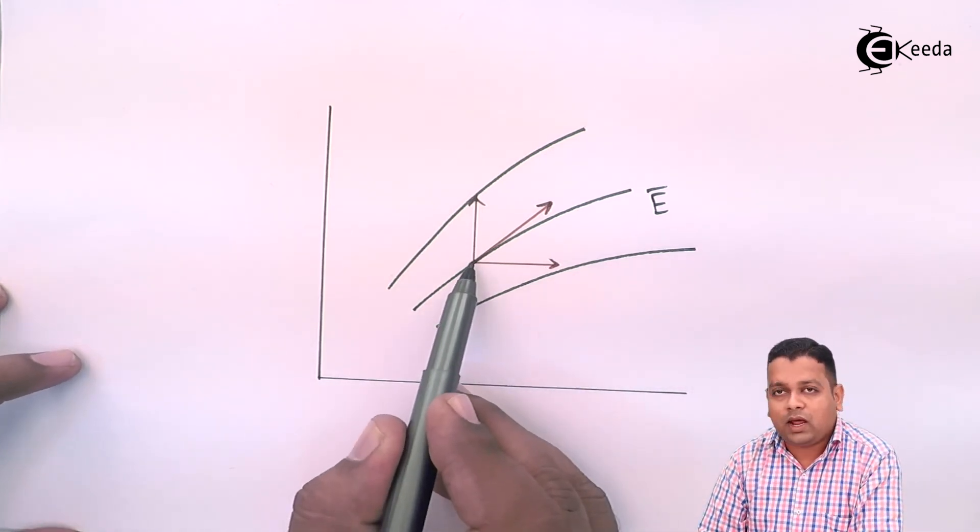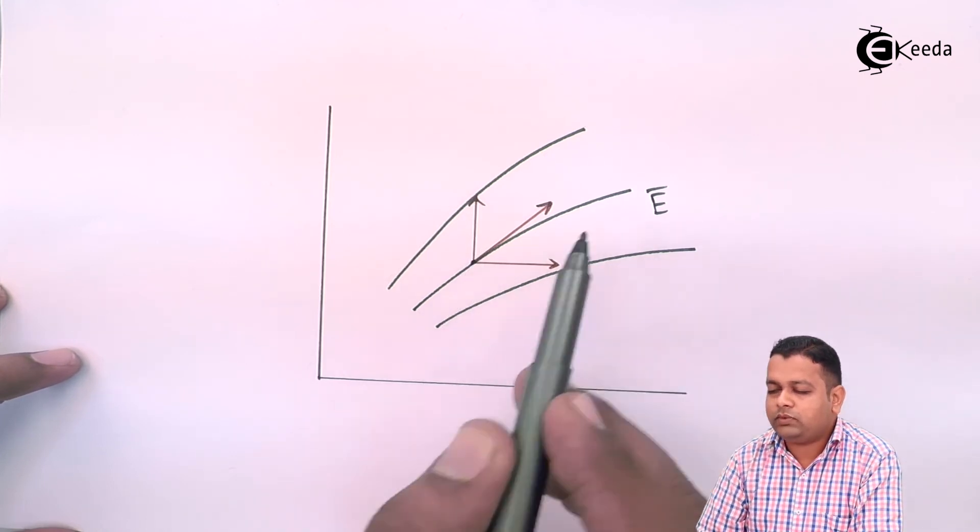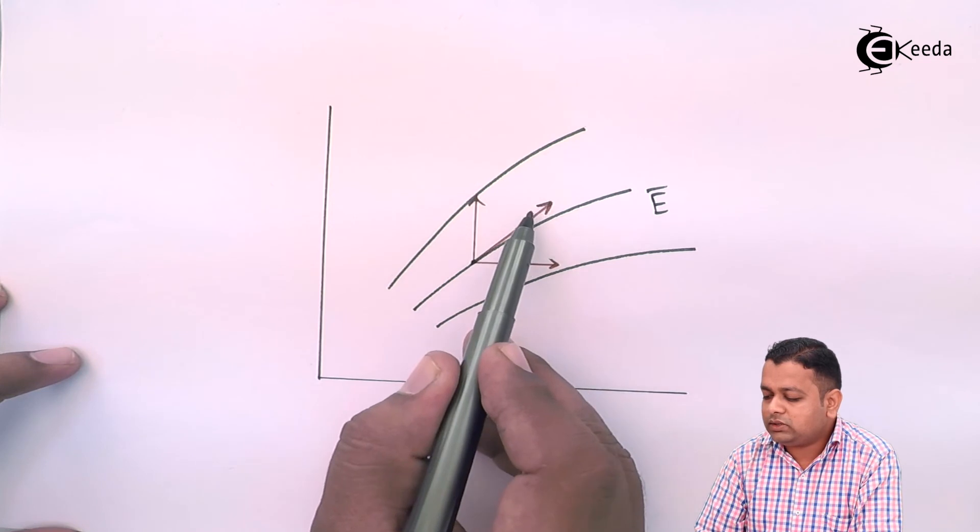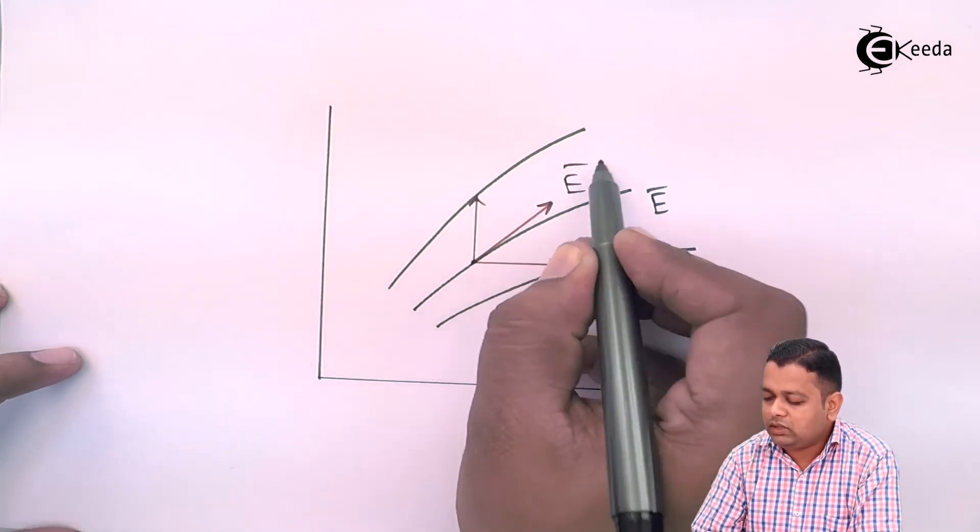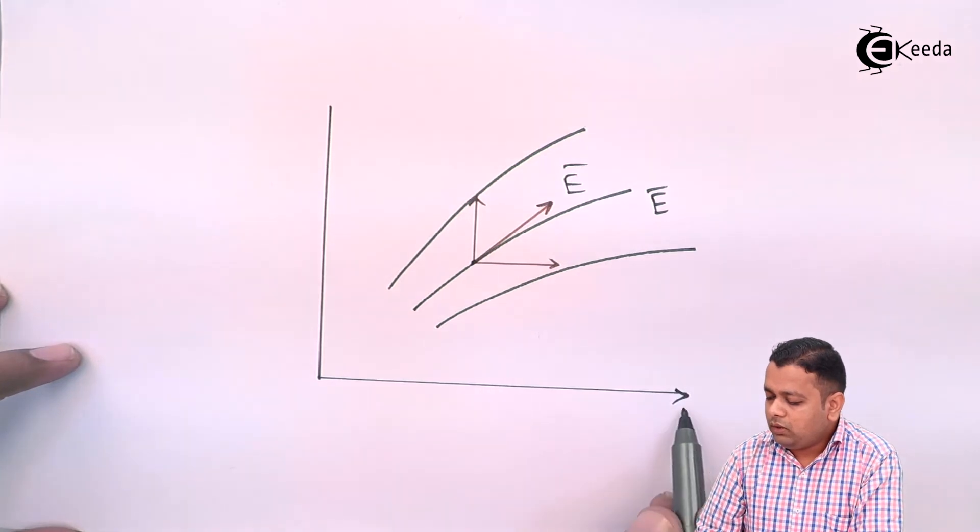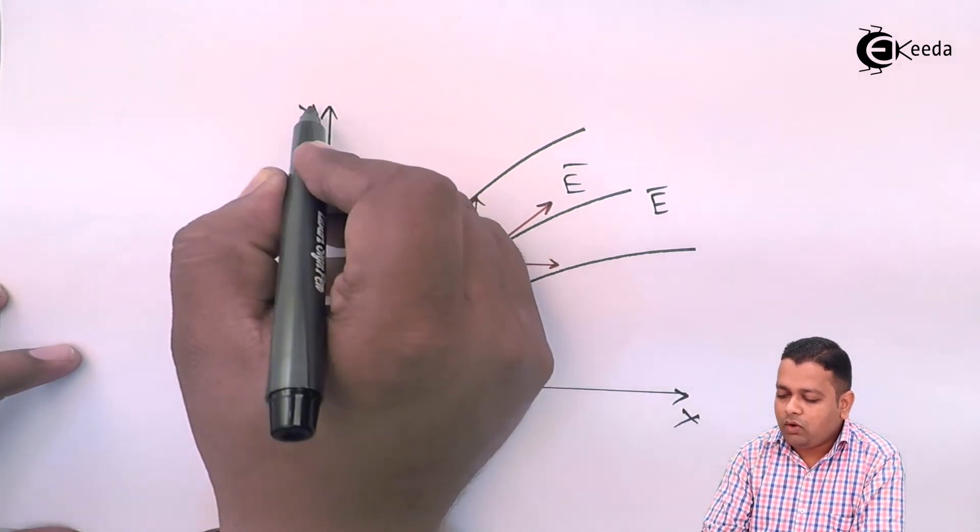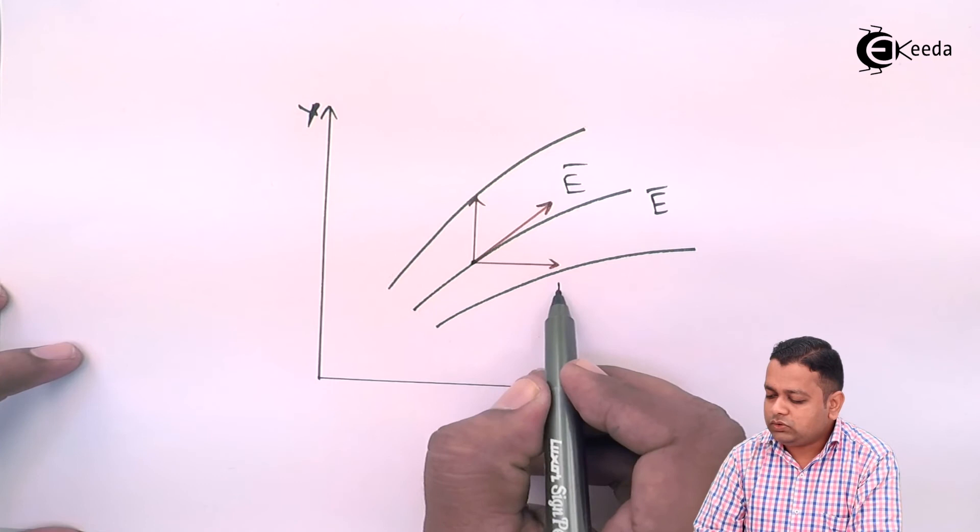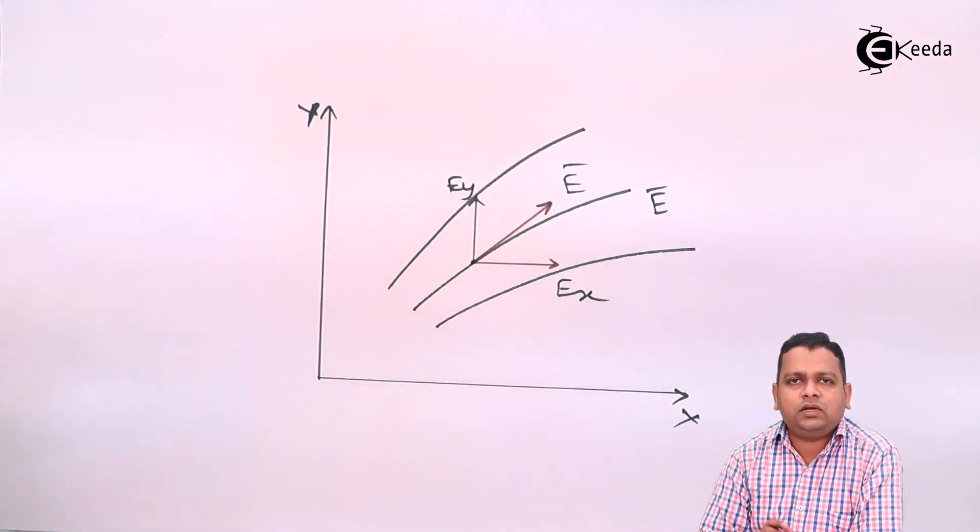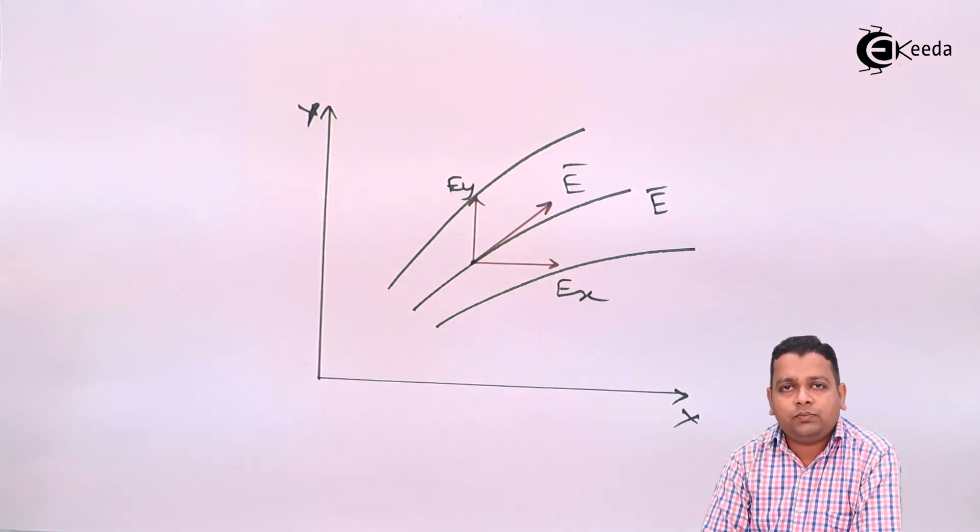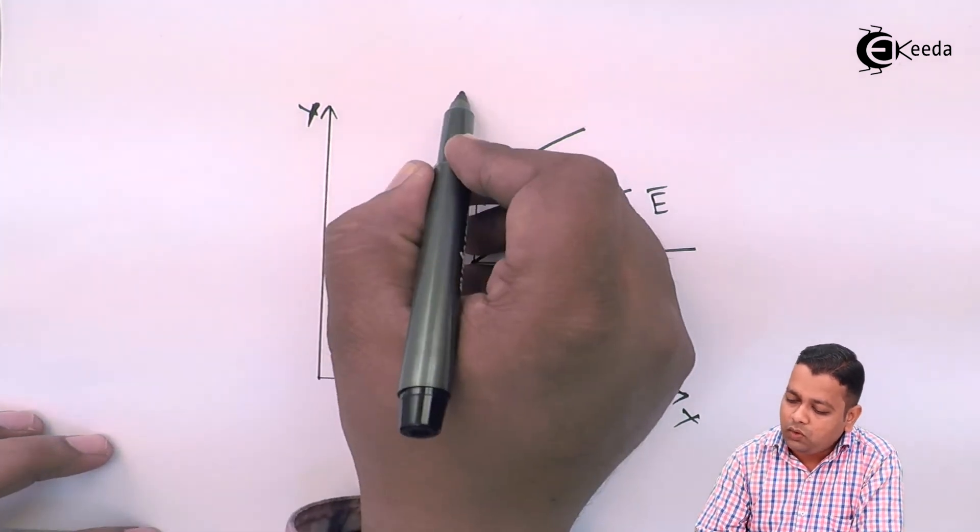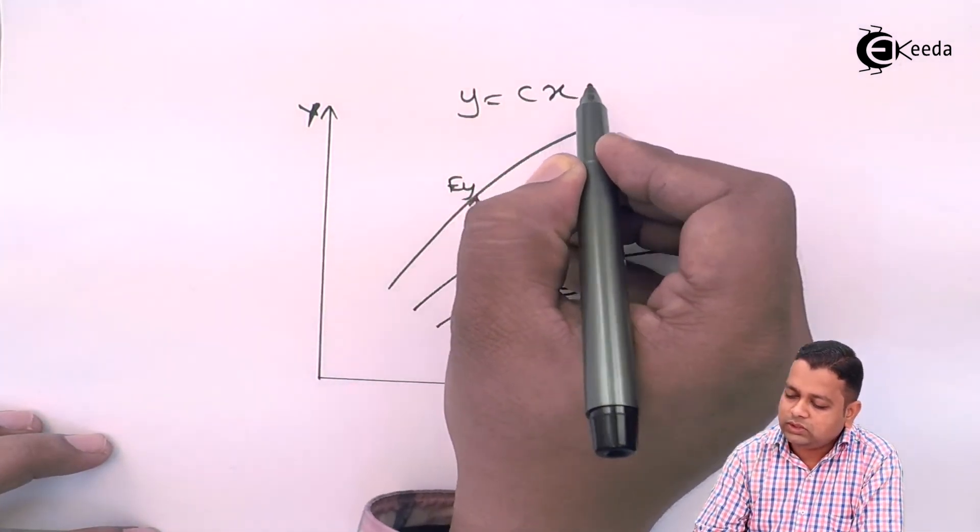We have to take the tangent at any point of this electric field. So, now this tangent will represent us this kind of, let us say e bar is this one. So, we can have x and y component for example. So, this will be e x, this will be e y. So, just representing the lines, we can have the representation in terms of equations. So, simply we can have y is equal to c x.